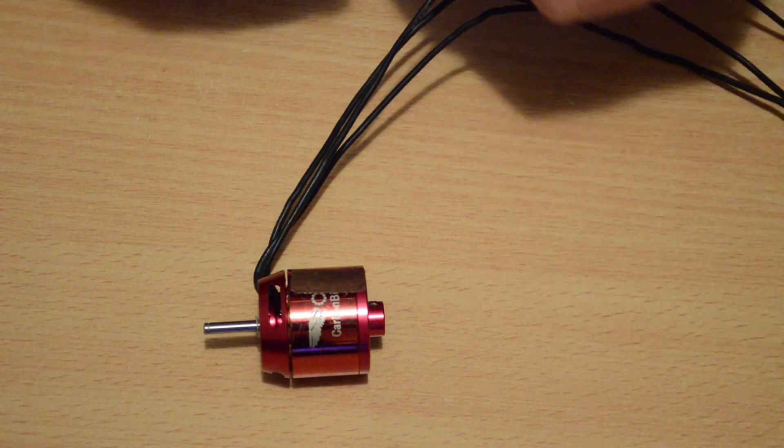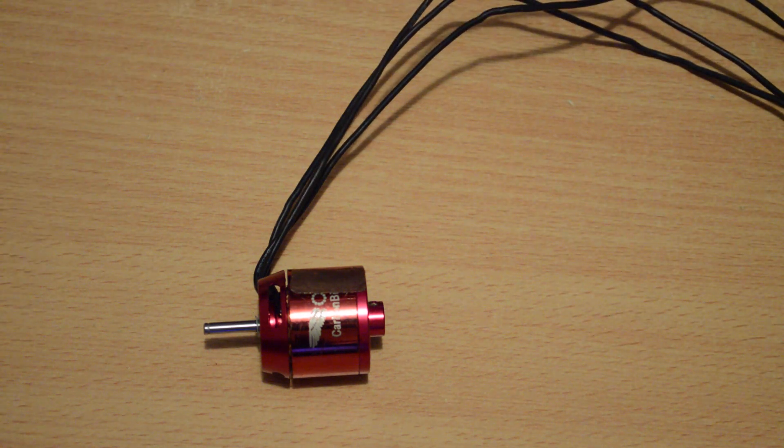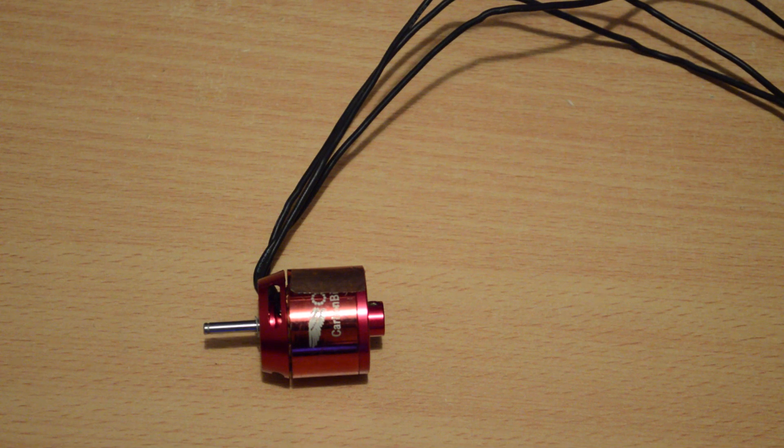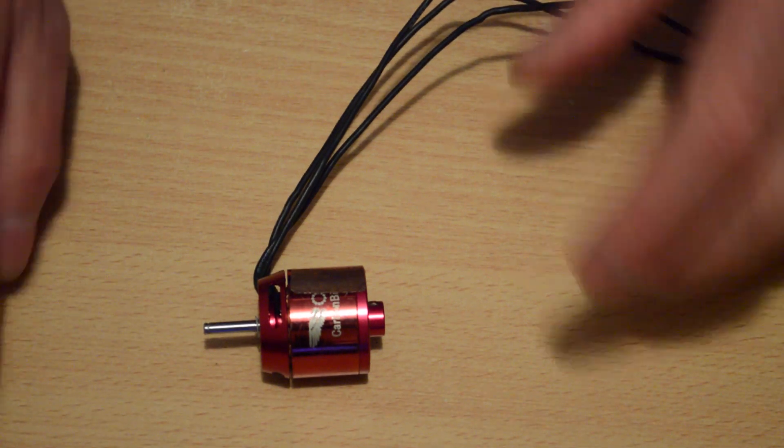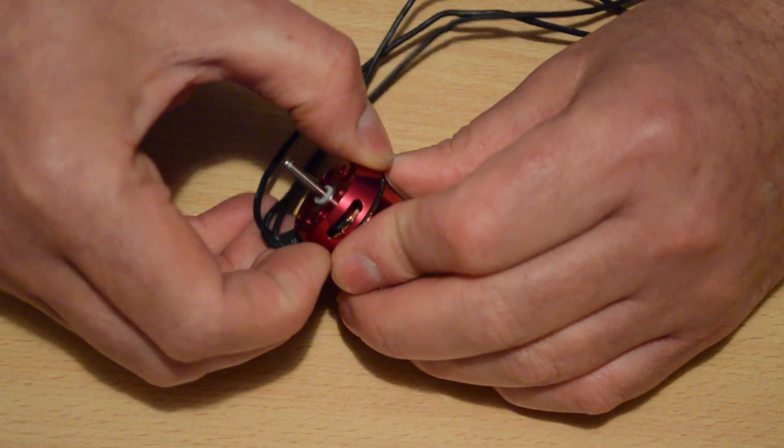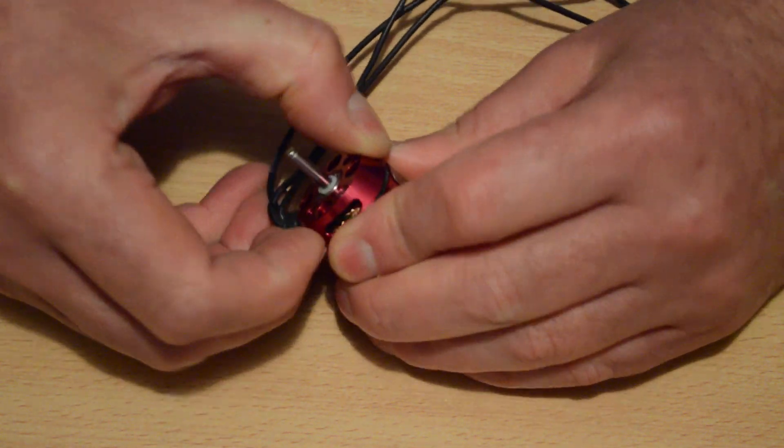I've already pulled this circlip off. Actually when I fix a motor, I don't even tend to pull it off the arm of the quadcopter. I tend to do it in place. But anyway first thing you need to do whenever you're fixing any motor is get the circlip off and usually I can prise them off with a screwdriver.